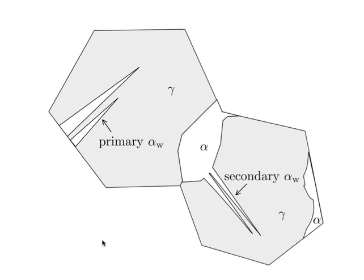This is a schematic diagram of what Widmanstätten ferrite looks like. The first thing is that you have thin wedges — it's no longer lenticular plates but wedge-shaped objects. When they form directly from the austenite grain boundaries they are known as primary Widmanstätten ferrite plates, and if they form from the ferrite then they are known as secondary. That's just terminology — they're both essentially the same phase.